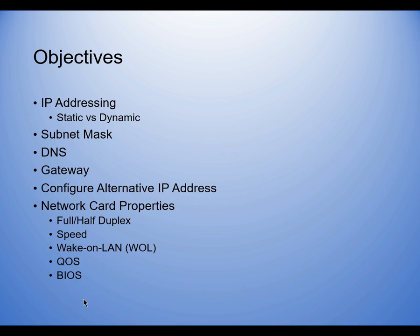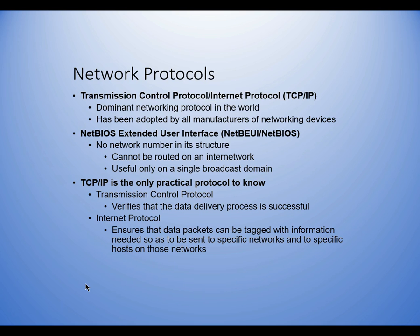We'll look at how to configure the alternative IP, and then look at some network card properties: full/half duplex, speed, wake on LAN, quality of service, and BIOS. The other type of IP address we'll look at is IPv6 — a much better protocol, and not as complex as IPv4. We don't have to do as many things with it as we do with IPv4.